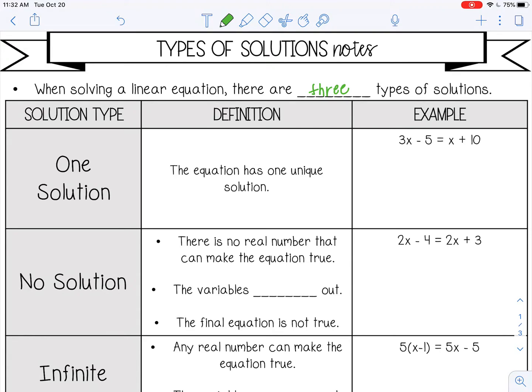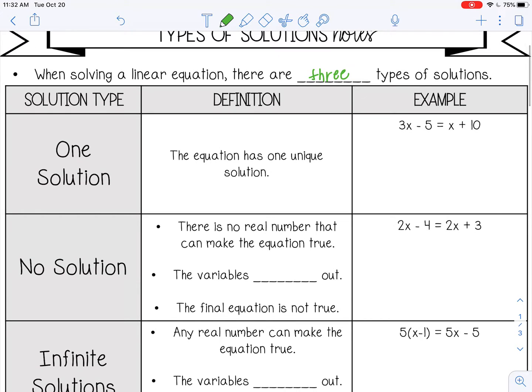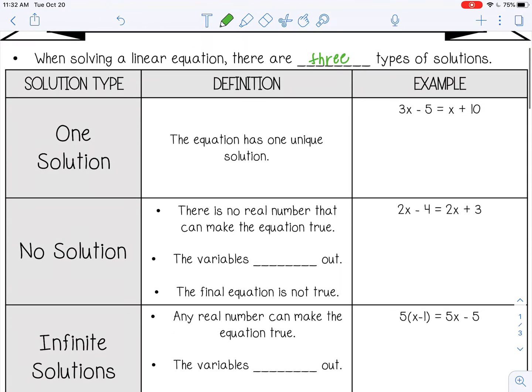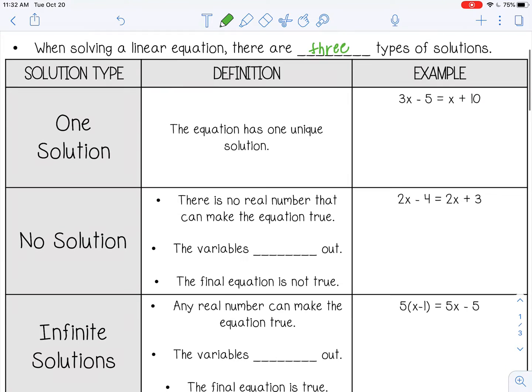The first type is probably the most common type and probably the one you have seen when we have been doing one step, two step, multi-step equations. And that is one solution. There's only one solution. The equation has one unique solution that makes it true.